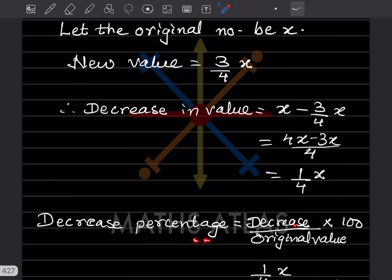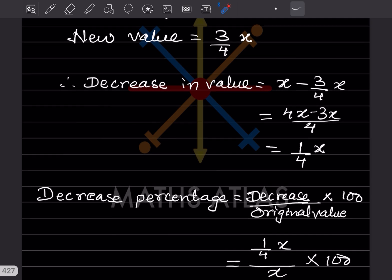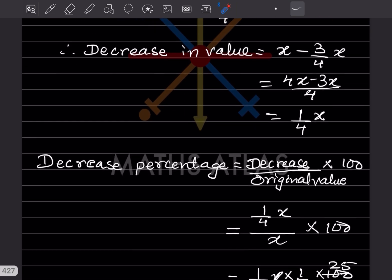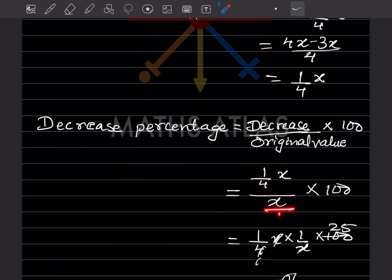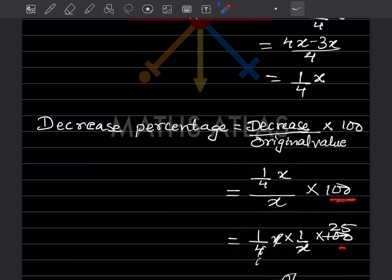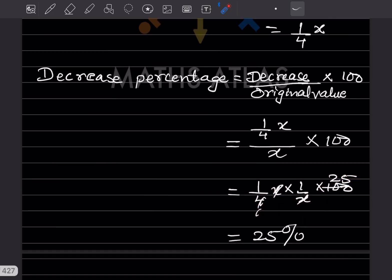Decrease percentage = Decrease ÷ Original Value × 100 = (x/4) ÷ x × 100 = 1/4 × 100 = 25%. Therefore, the decrease percentage is 25%.